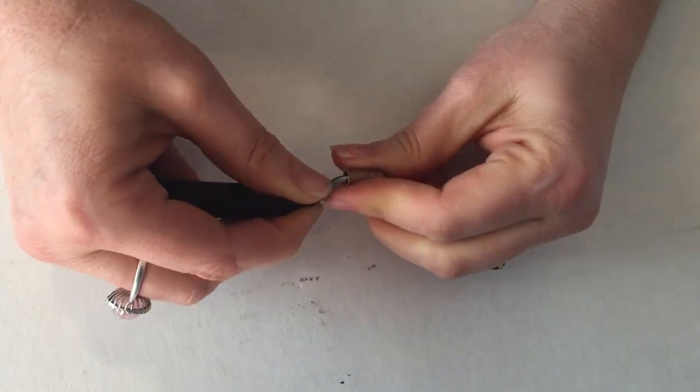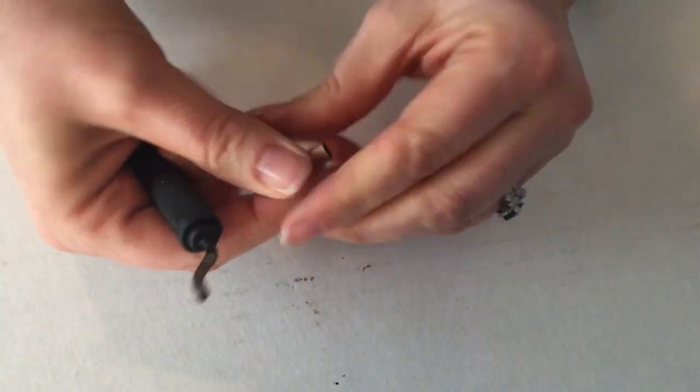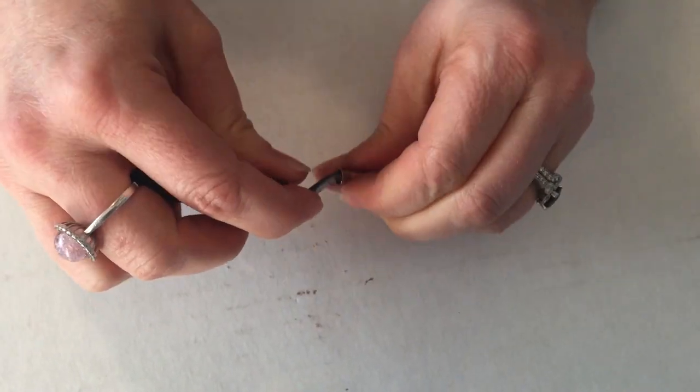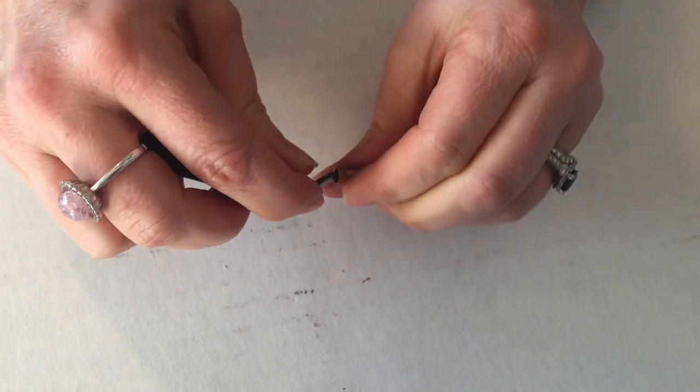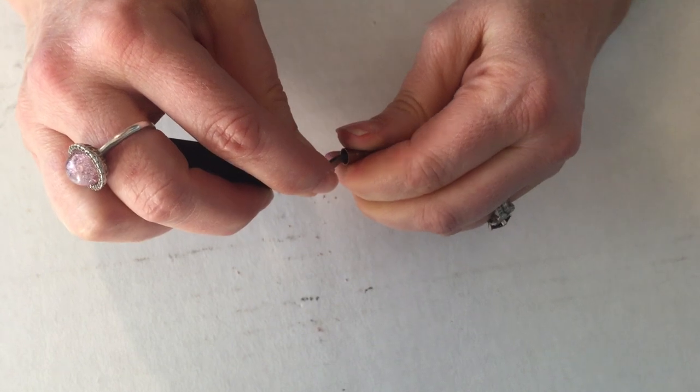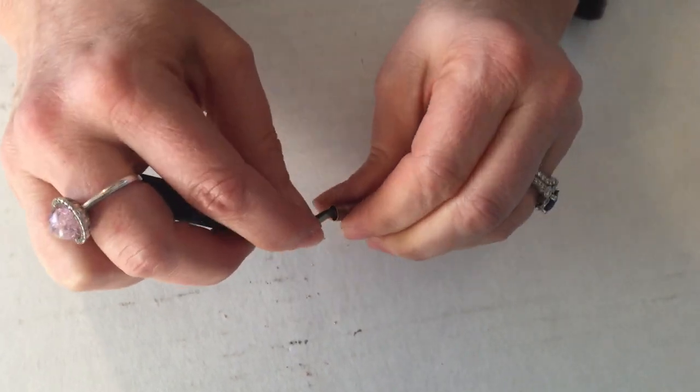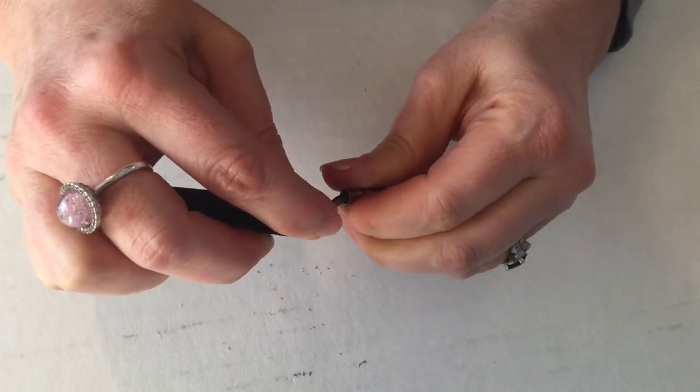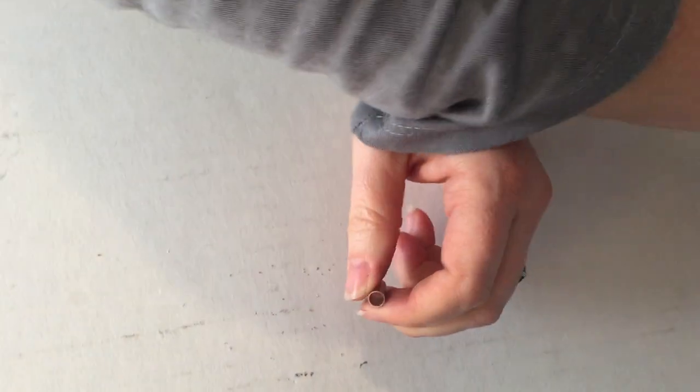Kind of creates a little bevel. Do that on the other side. We want it equal so it flares equally. It appears to look the same on each side. Looking good.